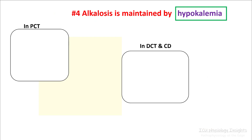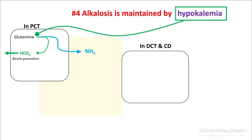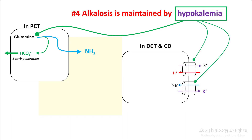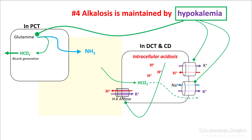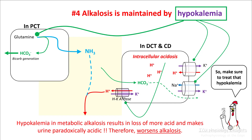Hypokalemia is very important in metabolic alkalosis. As we learned in the metabolic acidosis lesson, hypokalemia is a strong stimulator for ammonia production and it results in bicarb generation. In the collecting duct and distal convoluted tubule it stimulates your hydrogen-potassium exchange and results in intracellular acidosis. Intracellular acidosis results in better bicarb absorption. It also stimulates hydrogen-potassium ATPase resulting in more hydrogen ion secretion, and therefore hypokalemia in metabolic alkalosis results in loss of more acid and makes your urine paradoxically acidic. Hypokalemia maintains your alkalosis even if you have corrected the primary etiology, so make sure that you treat hypokalemia aggressively.